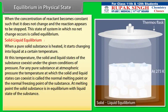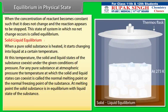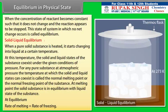At the melting point, the solid substance is in equilibrium with the liquid state of the substance. Consider ice and water at 273 Kelvin, the melting point of ice, taken in a perfectly insulated thermos flask. The temperature as well as the masses of ice and water remain constant. This represents a dynamic equilibrium between ice and water. Since there is no change in mass, the number of molecules going from ice into water equals the number going from water into ice. Thus, at equilibrium, the rate of melting is equal to the rate of freezing.